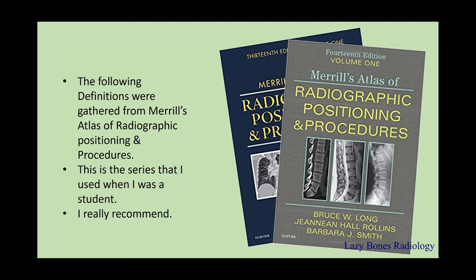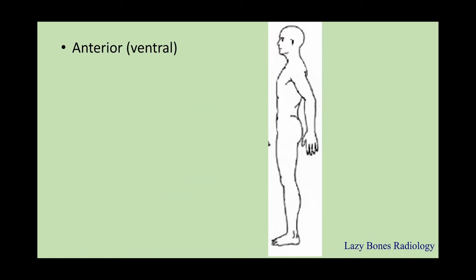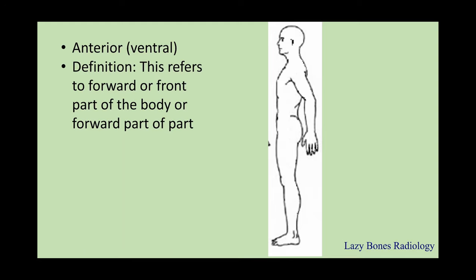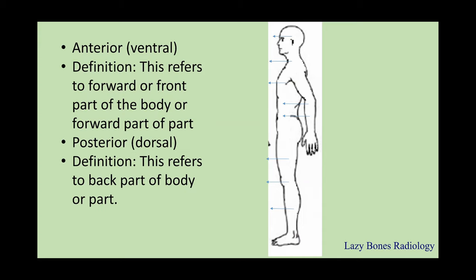Anterior refers to the forward or front part of the body or body part. The front surface of the body is known as the anterior surface, and if you're talking about a specific body part, for example the arm, that front part is also known as the anterior surface. Posterior is the opposite — this refers to the back part of the body or the part.